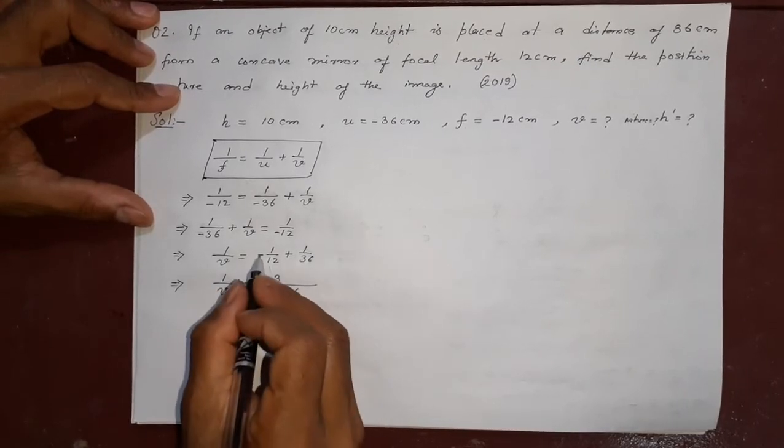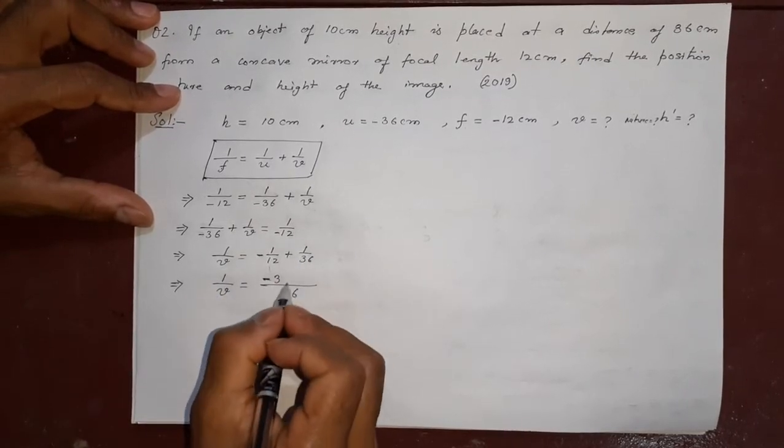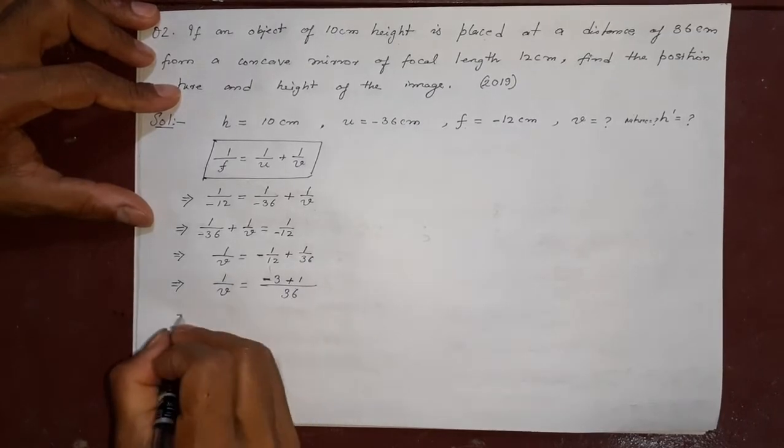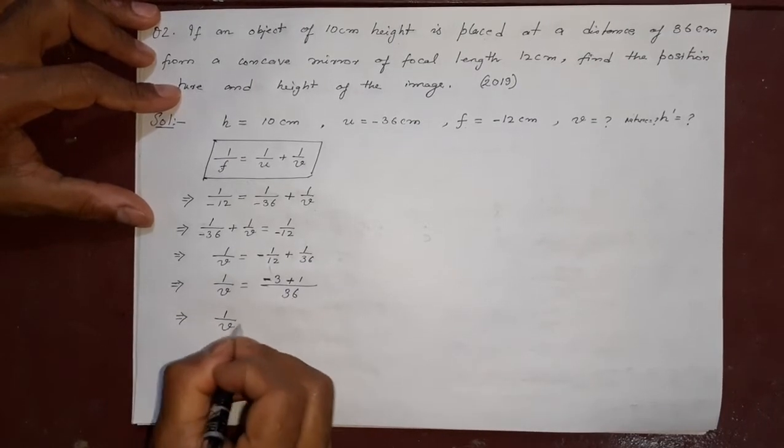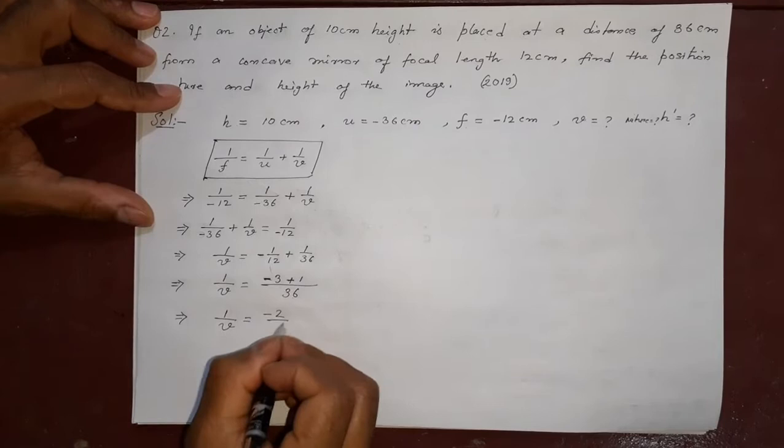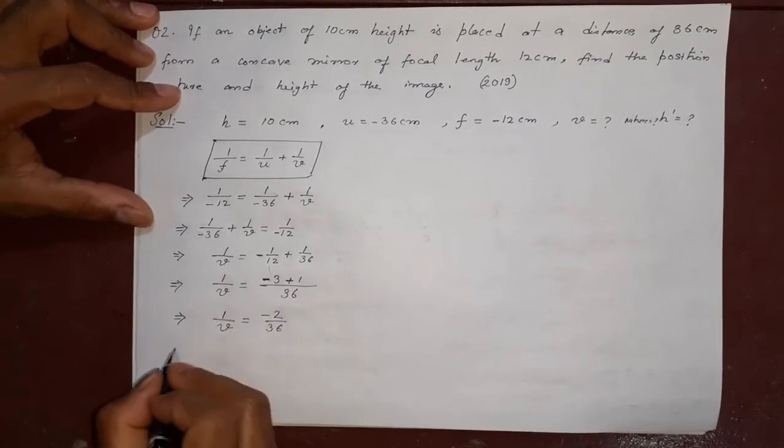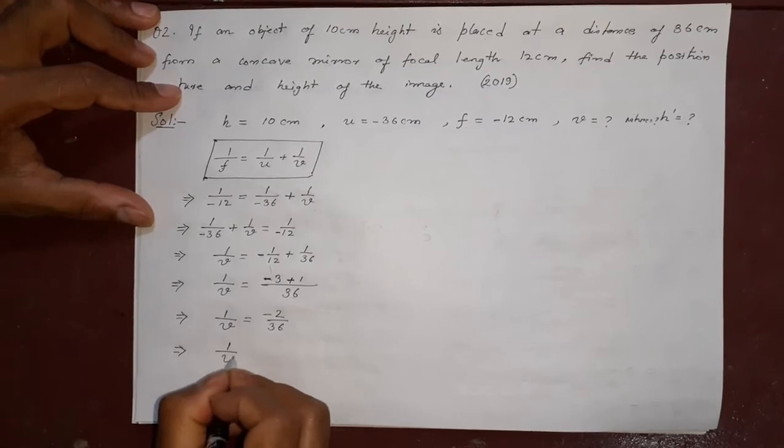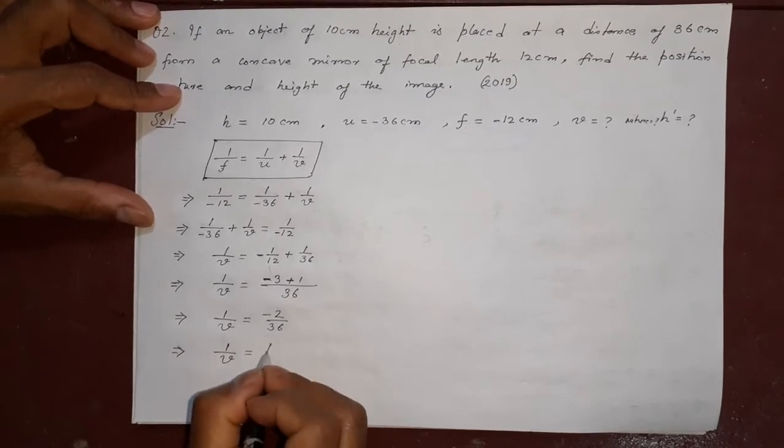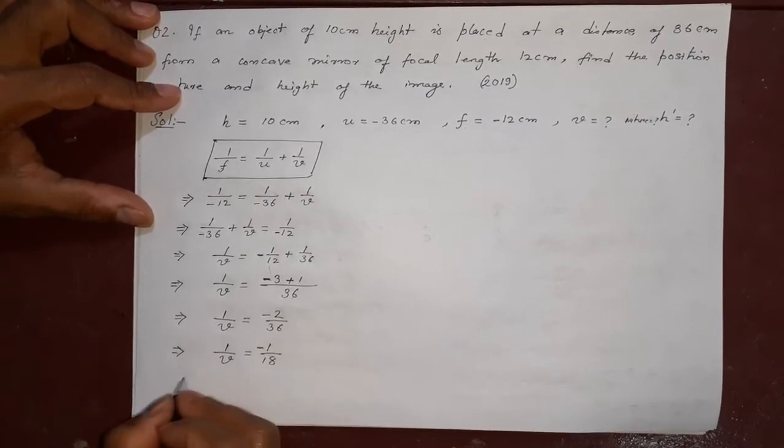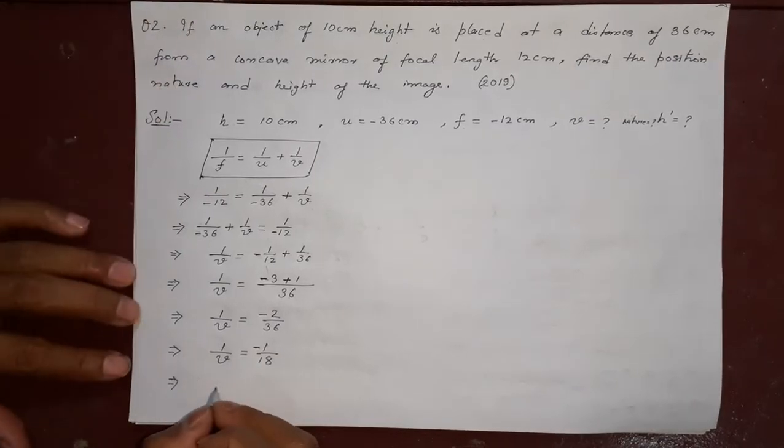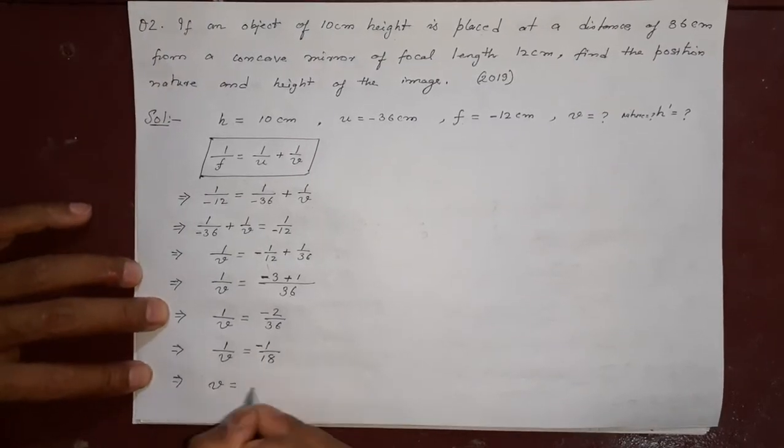3, this minus is remaining here. 36 ones are 36, so 1 ones are 1. This will give you 1 by v equal to minus 2 by 36. Sign opposite, you will subtract, the bigger sign is minus. 1 by v equal to minus 1 by 18. So what you got here is v is equal to inverse of this, minus 18 centimeter.